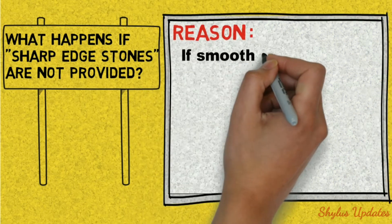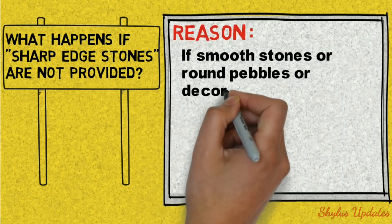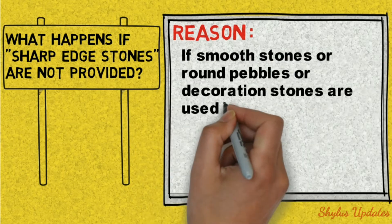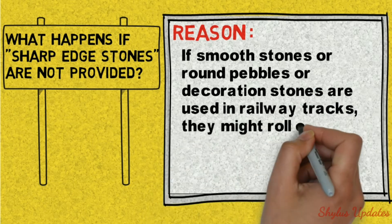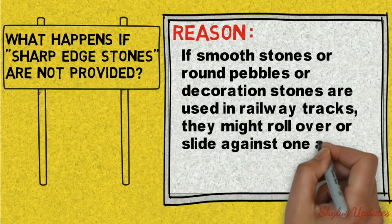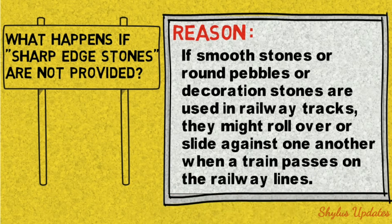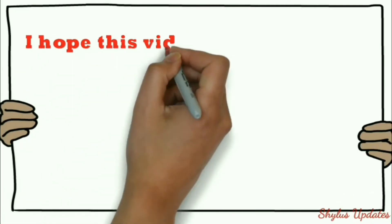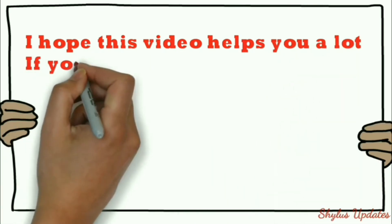If smooth stones, round pebbles, or decoration stones are used in railway tracks, they might roll over or slide against one another when a train passes on the railway lines. I hope this video helps you a lot. If you like this video, kindly do subscribe.